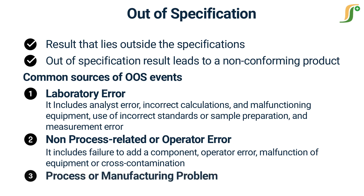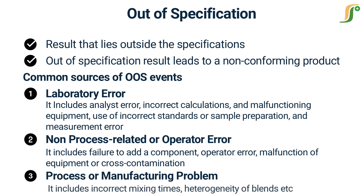The third source is a process or manufacturing problem. This category is concerned with process or manufacturing errors due to control over processes. For example, incorrect mixing times and heterogeneity of blends. Confirmation that this was the cause of the OOS condition would constitute a failure within that particular lot, but may also mean that other lots may be impacted as potential failures.